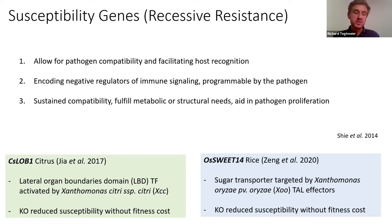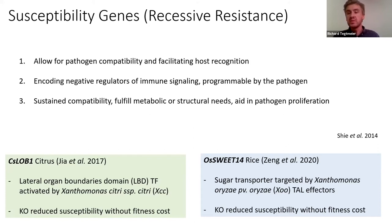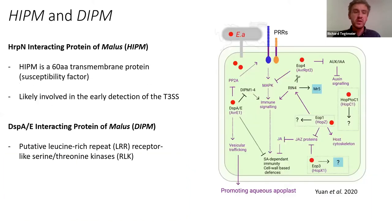Two quick examples from literature: CSLOB1 in grapefruit, conserved in citrus, is a lateral organ boundaries domain transcription factor targeted by Xanthomonas citri. Knockout of this gene reduced susceptibility with minimal fitness costs, which is one of the biggest criticisms of susceptibility genes. Similarly, OsSWEET, found in rice, is a sugar transporter targeted by Xanthomonas species via transcription activator-like effectors. Knockout of this gene again showed reduced susceptibility with no statistically significant fitness cost.